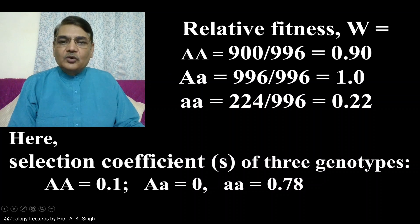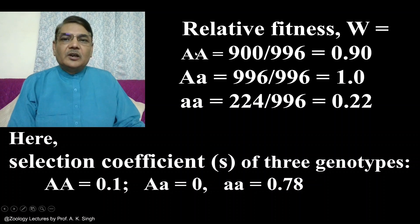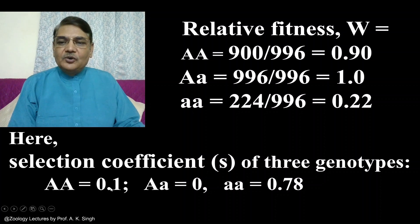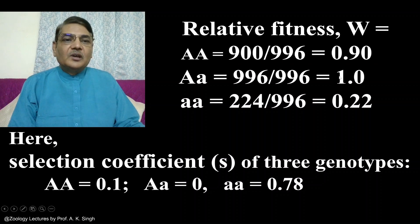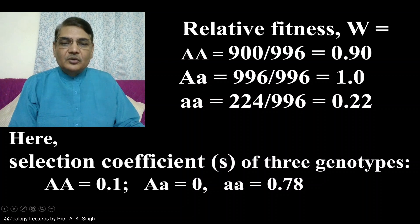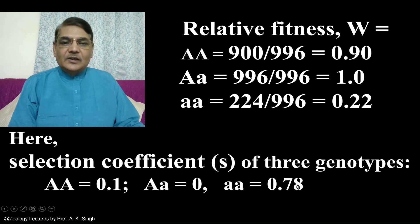Selection coefficient calculation is quite easy — it uses the formula 1 minus W. The relative fitness of AA is 0.9, and subtracting from 1 gives 0.1, so the selection coefficient of AA is 0.1. The selection coefficient of the heterozygote Aa is 0, because its relative fitness is 1, so 1 minus 1 equals 0. The relative fitness of the third genotype aa is 0.22, so 1 minus 0.22 gives a selection coefficient of 0.78.